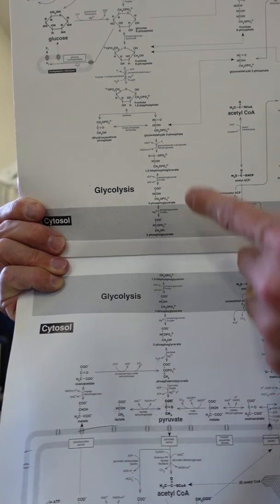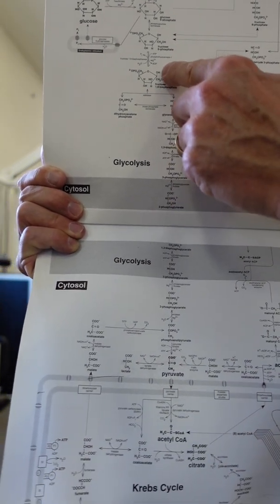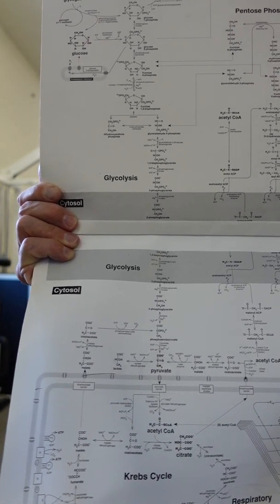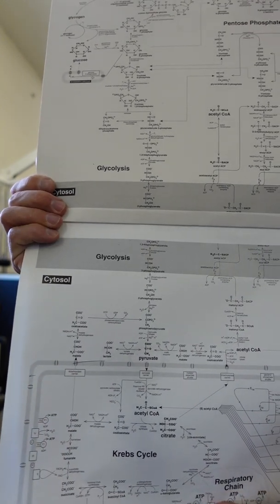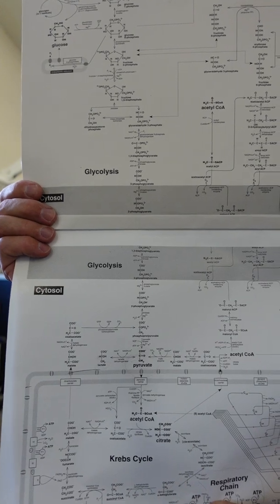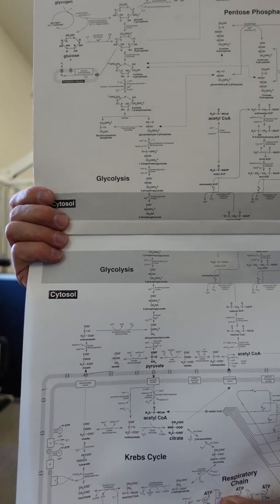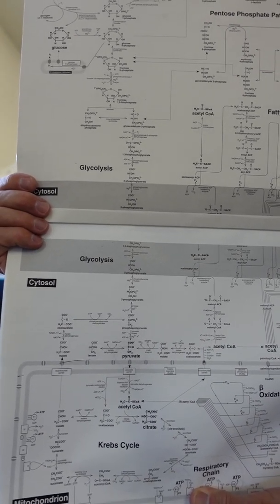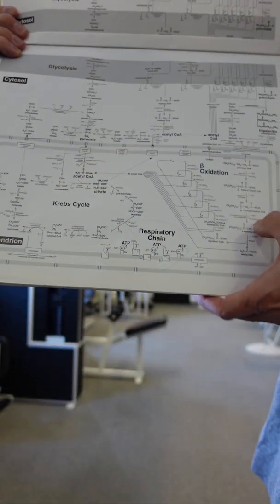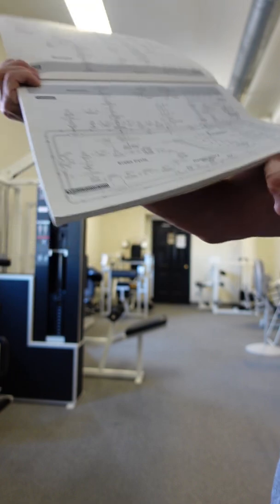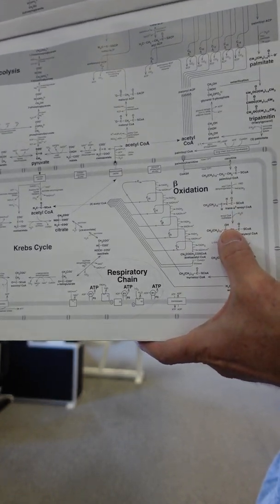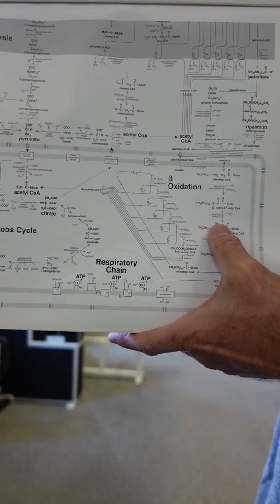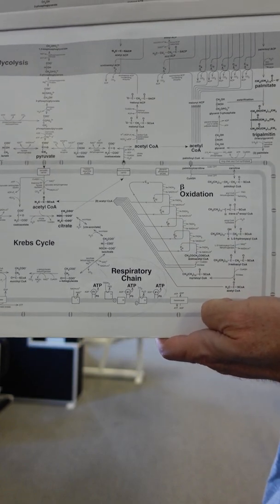Fructose drives upregulation of this enzyme. The production of its byproducts consumes ATP — the currency for energy in the cell — and degrades it to AMP. The adenosine in that stacks up and has to be metabolized as a purine. The end product of purine metabolism is uric acid, which drives gout, hypertension, and metabolic syndrome. Uric acid also inhibits fatty acid oxidation at the level of beta oxidation. He'll make reference to an enzyme called enoyltransferase, which inhibits the metabolism or breakdown of fatty acids.